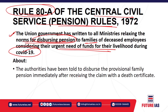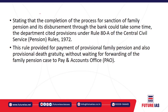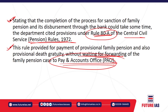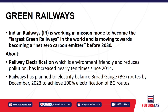Authorities have been told to disburse the provisional family pension immediately after receiving the claim with just a death certificate — that is sufficient. Rule 80A, which deals with the Central Civil Services Pension Rules, ensures disbursement to families is essential because such families are in desperate need of money. This rule provides a waiting period where the file is processed before the pension is dispersed to needy families.